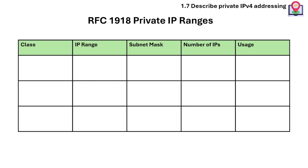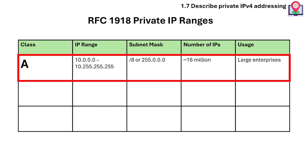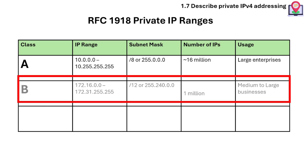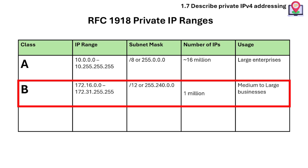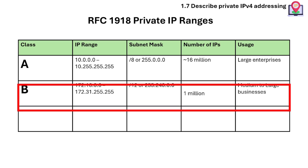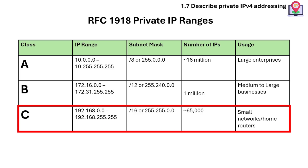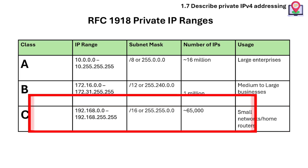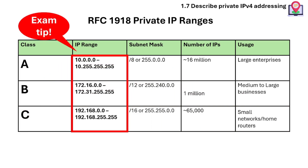Private IP addresses are defined in RFC 1918 with different classes and IP ranges. There is a range for Class A private IP addresses, a range for Class B private IP addresses, and a range for Class C private IP addresses. Exam tip: remember the start and end IP of each private range, as you may be asked to identify if an IP is public or private.